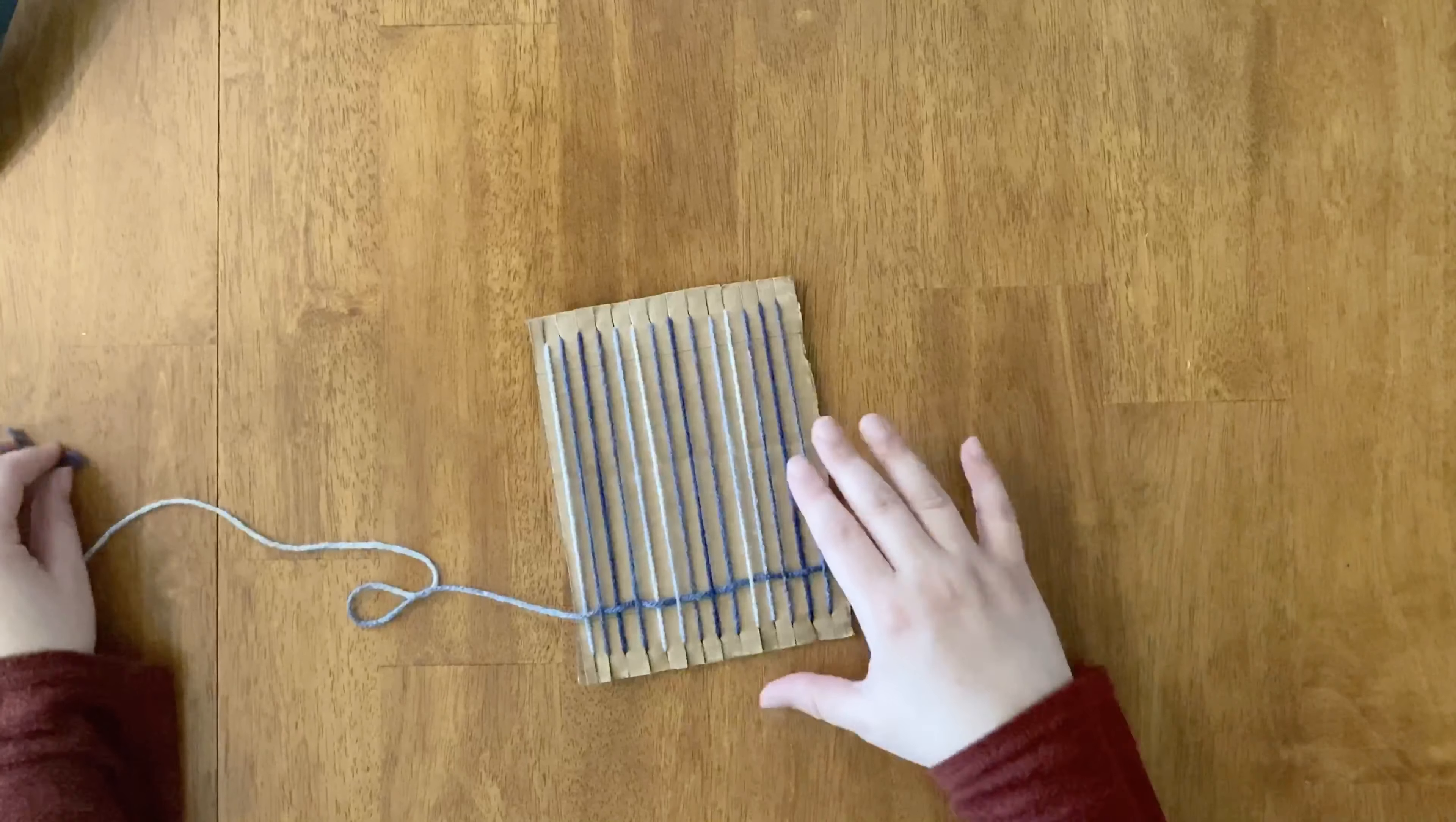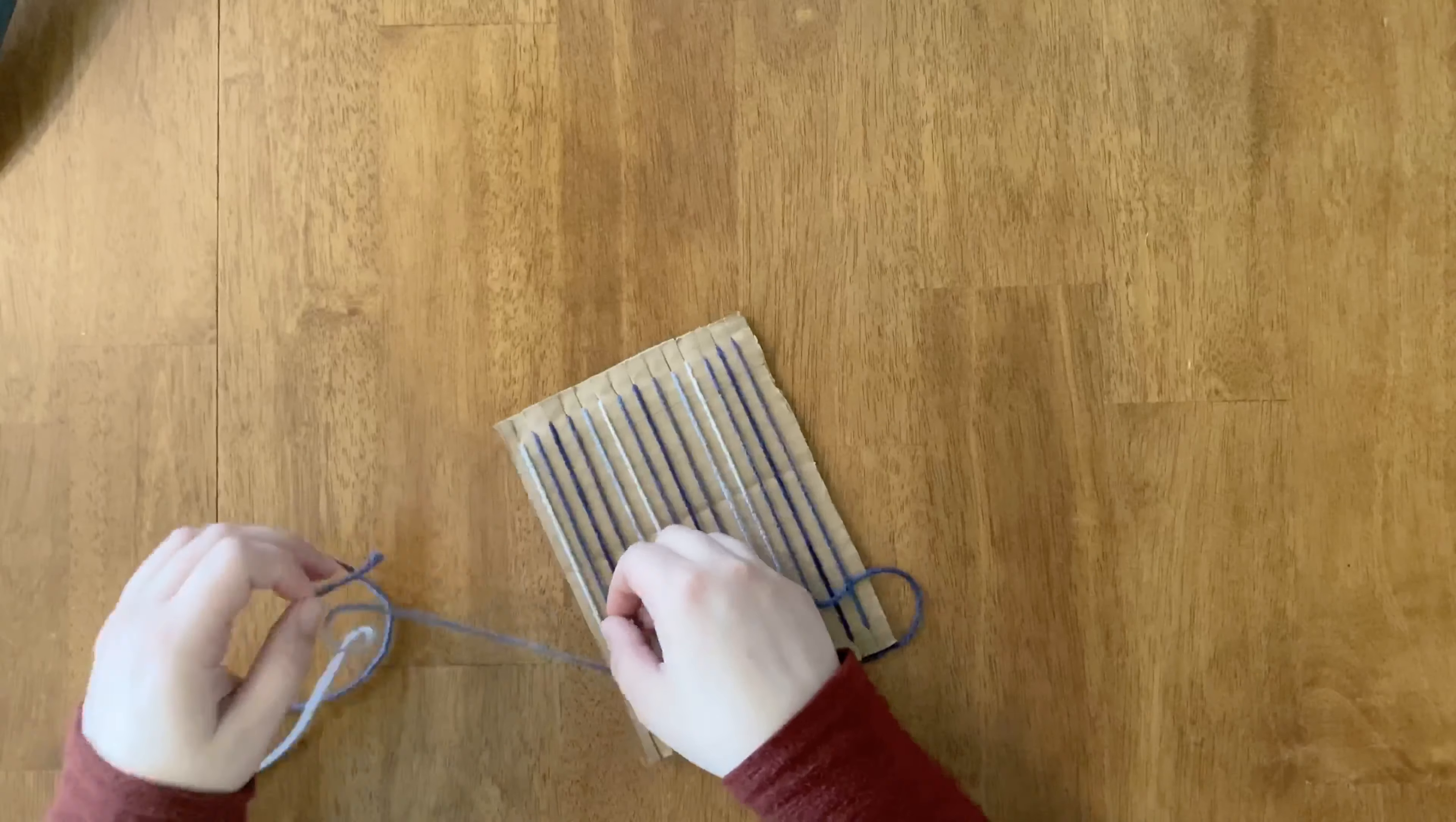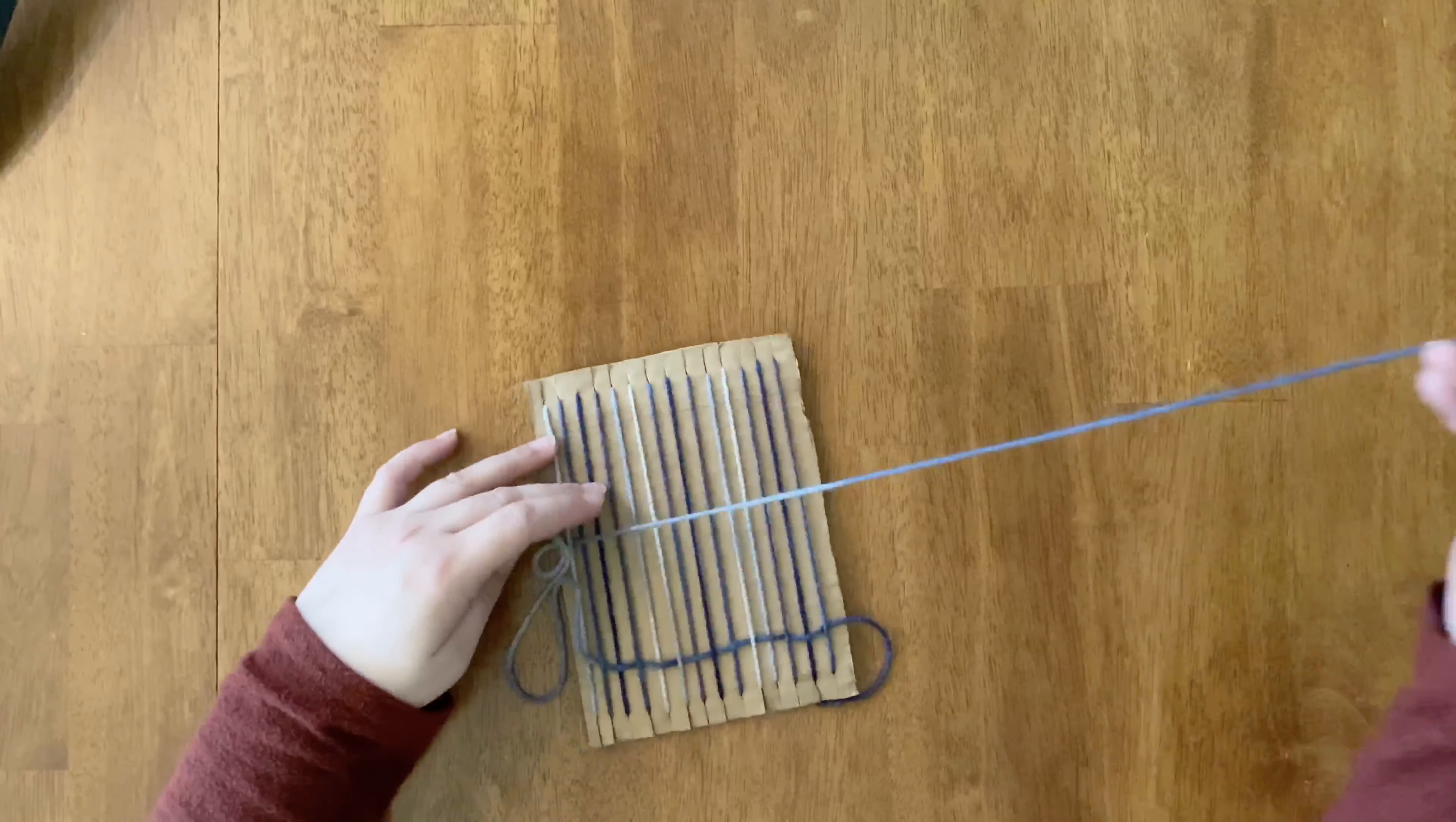Since we're at the end of our row here you'll see that we're over the end and we'll turn the string around and then go under, just above it like this.